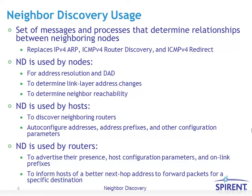Neighbor Discovery is a set of messages and processes that determine relationships between neighboring nodes. It replaces IPv4 ARP, ICMP version 4 Router Discovery, and ICMP version 4 Redirect. It is used by any node — whether host or router — for duplicate address detection, to determine link layer address changes, and to determine neighbor reachability. Hosts use it to discover neighboring routers and for auto-configuration of their address, to assign prefix and other configuration parameters.